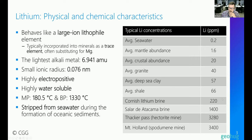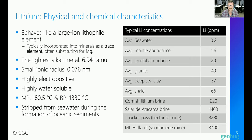I've also summarized a few figures for some potentially economic lithium systems. Cornish Lithium are interested in a brine associated with a granite in southwest Cornwall, with lithium values of about 200–220 parts per million. Salar de Atacama brines are almost an order of magnitude higher in concentration. We also have hard rock spodumene-type systems such as Mount Holland, which are highly enriched with respect to lithium — significantly higher than the brines. And Thacker Pass is a lithium clay-type system, also highly enriched.